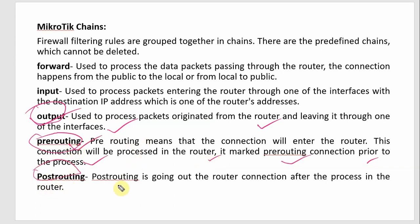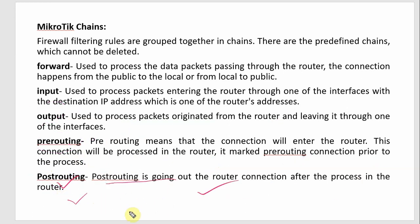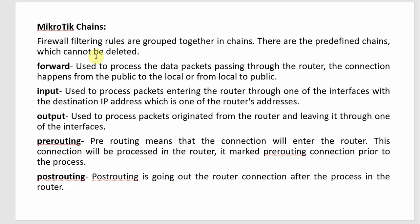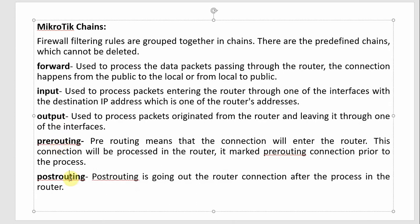Then Post-routing — after routing. When any packet is selected at the post-routing stage, it means the connection is going out of the router after the router has completed processing. The five MikroTik chains are: Forward, Input, Output, Pre-Routing, and Post-Routing.